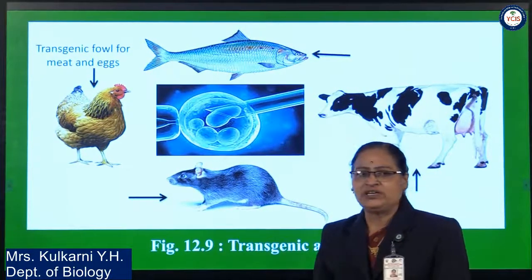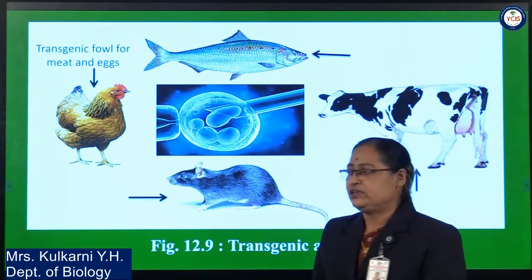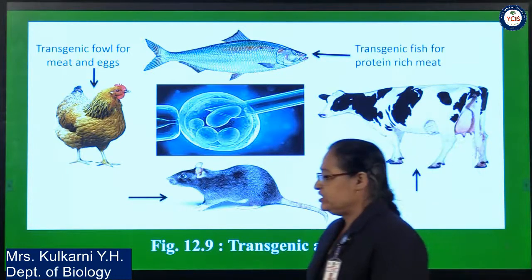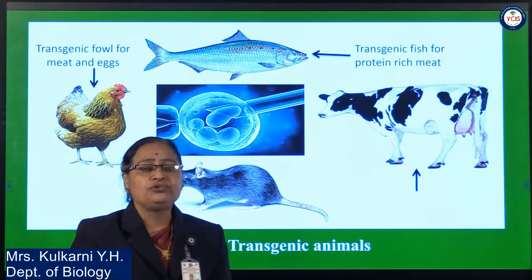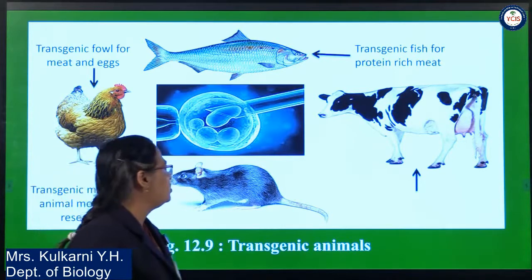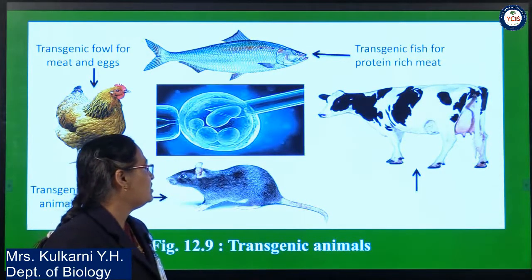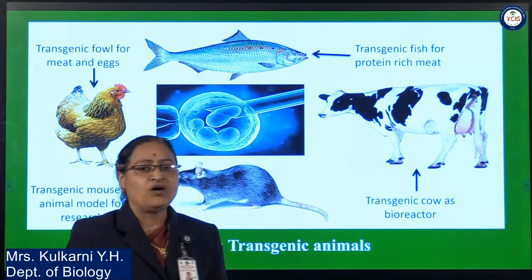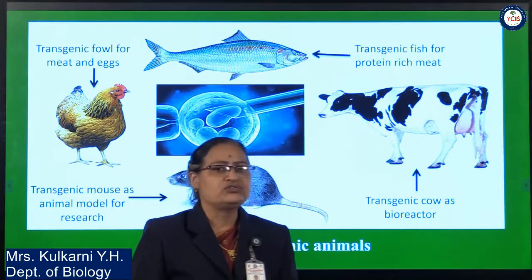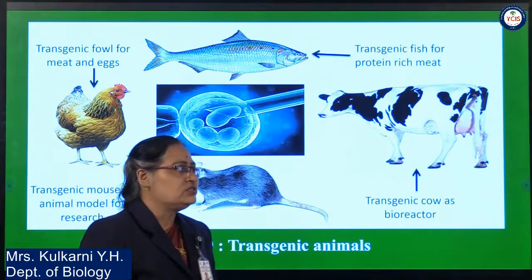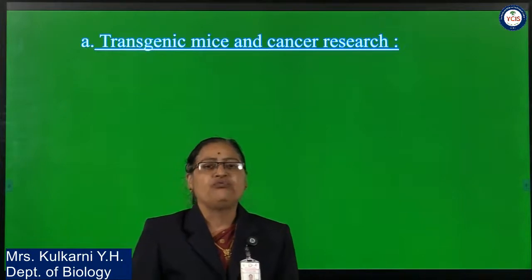In this lecture, we study applications of transgenic animals. Transgenic fowl, meaning birds, are used for meat and eggs. Transgenic fishes are used for protein-rich meat. Transgenic mice are used as models for research. Transgenic cow is used for meat production, milk production, and also as a bioreactor. We will study these transgenic animals and their applications one by one.